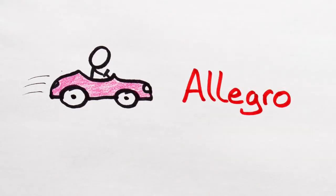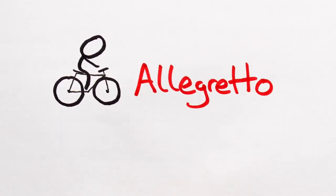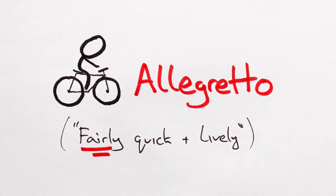Allegro, from the Italian merry or cheerful, tells us to play quick and lively. Allegretto tells us to play slightly slower than allegro, fairly quick and lively, if you will.